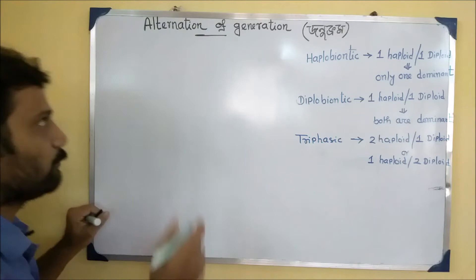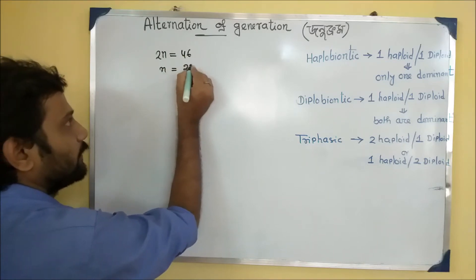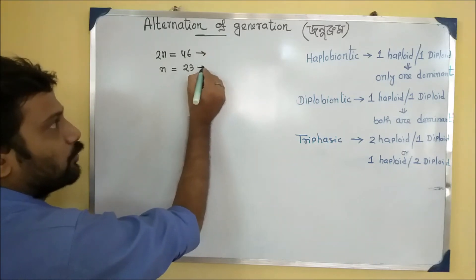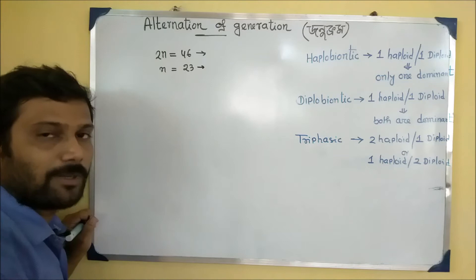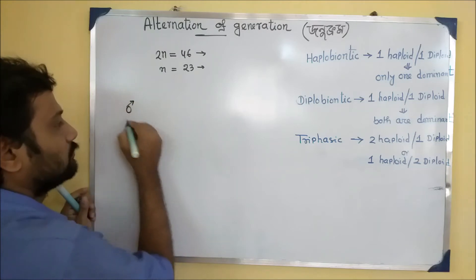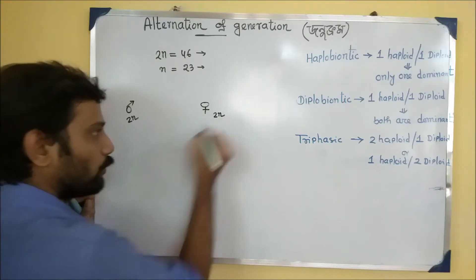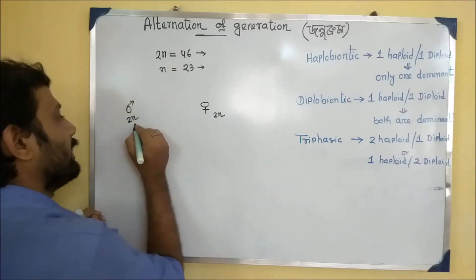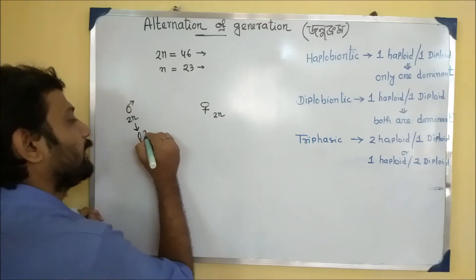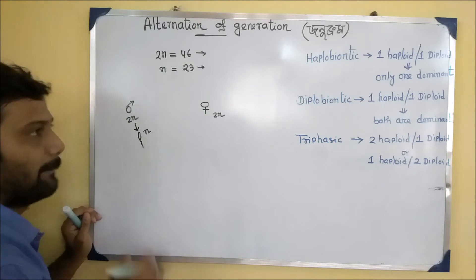What do we write about the human being? 2n equals 46, and n equals 23. What do we write about the 2n? What do we write about the gametes? The 2n is related to 1n. So we have to create a 2n.